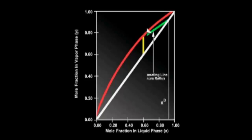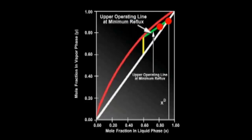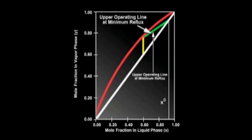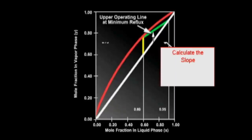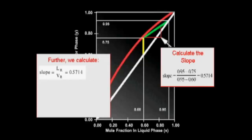We know that as the reflux ratio decreases, the slope of the upper operating line decreases and moves toward the equilibrium line. Therefore, the minimum reflux ratio is represented by the intersection of the upper operating line with the equilibrium line and the Q line. We draw the upper operating line at minimum reflux from the intersection of the Q line and the equilibrium line to the point on the 45-degree line which corresponds to the distillate mole fraction. Next, we calculate the slope of the upper operating line to calculate the internal reflux ratio in the rectifying section.